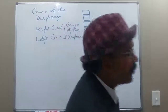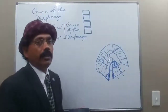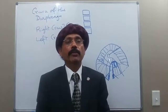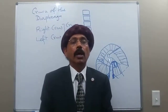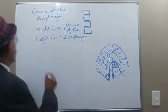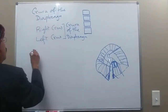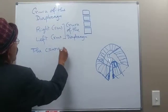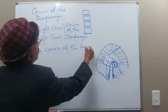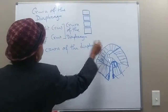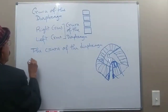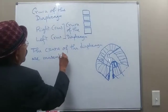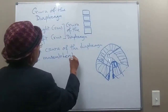We have two crura — right crus and left crus. They are musculotendinous bundles that arise from the anterior surface of the bodies of the upper three lumbar vertebrae.